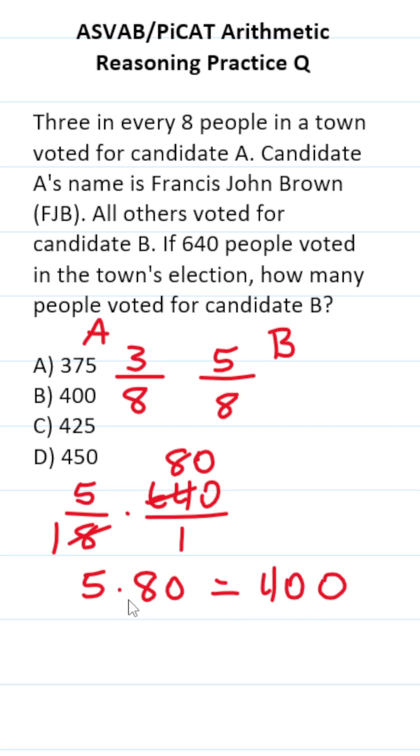Again, just tack on that zero. So five times 80 is 400. In other words, 400 people voted for candidate B over FJB.